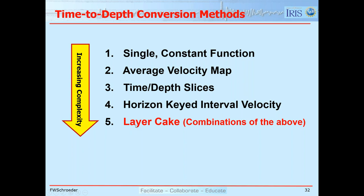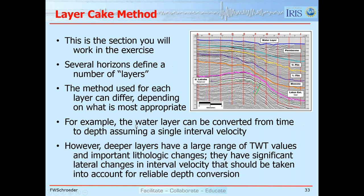The fifth method, the layer cake, is a combination of methods one through four. Using a line from the Gippsland Basin — the Barracuda Anticline — with columns A through J, the main layers are represented by the water bottom reflection, aqua, gold, blue, orange, and magenta horizons, giving five layers to reach the upper Latrobe or top Latrobe unconformity.